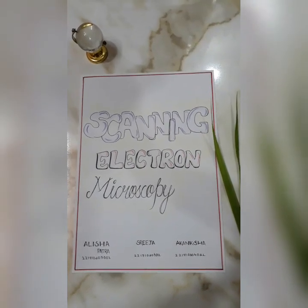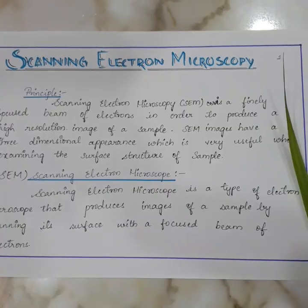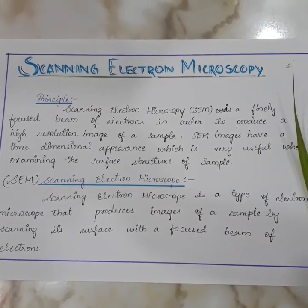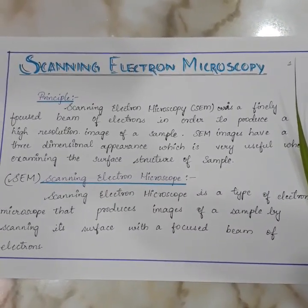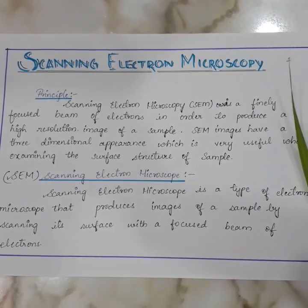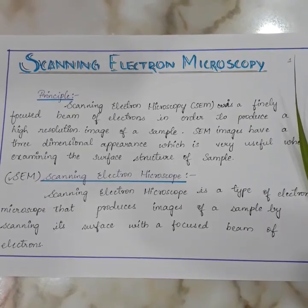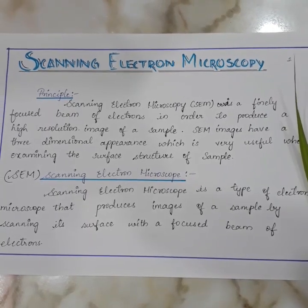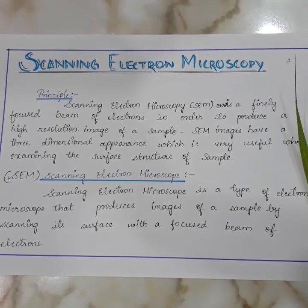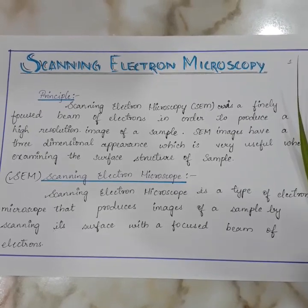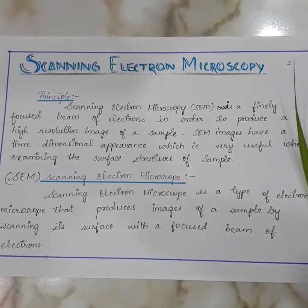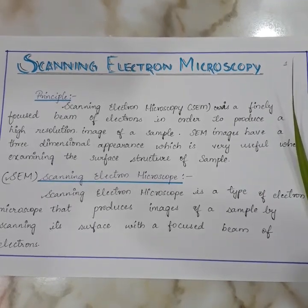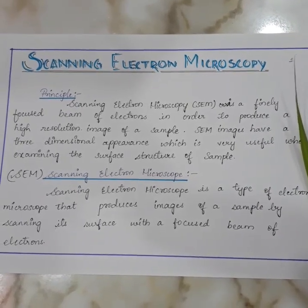Scanning electron microscopy uses a finely focused beam of electrons to produce a high-resolution image of a sample. SEM images have a three-dimensional appearance, which is very useful when examining the surface structure of a sample. A scanning electron microscope is a type of electron microscope that produces images of a sample by scanning its surface with a focused beam of electrons.